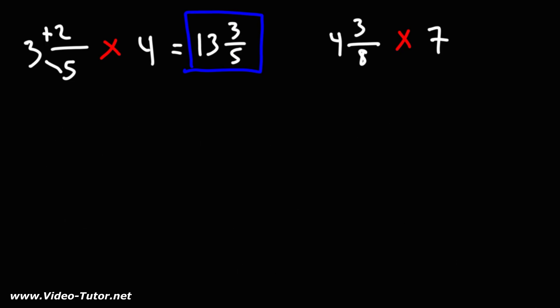So for the next example, let's do it both ways. Let's begin by converting the mixed number to an improper fraction. So we'll rewrite the denominator, 8. Then we'll multiply the whole number by the denominator: 4 times 8 is 32, plus the numerator, that's 35.